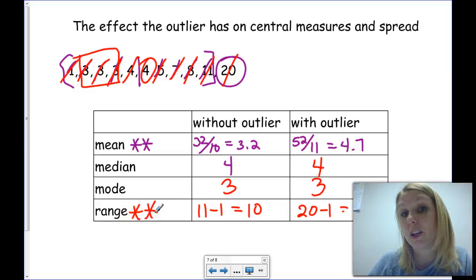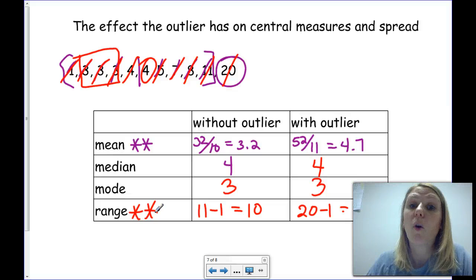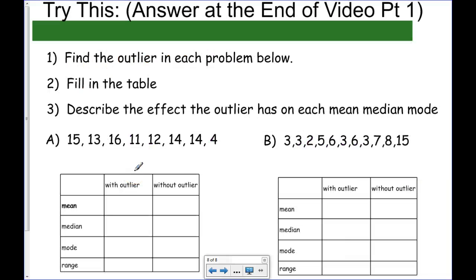So, remember, in general, outliers only affect the mean of the measures of central tendency, and it affects the range. Well, remember that problem I gave you at the beginning of the video?